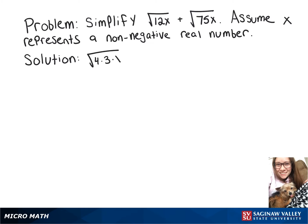So we can break this first one up into 4 times 3 times x, and the second one we can break up into 25 times 3 times x.